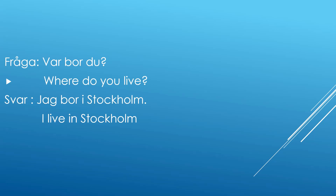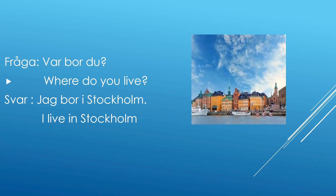The next question word is 'var', which means 'where'. Example: 'Var bor du?' means 'where do you live?' The answer can be 'Jag bor i Stockholm' — I live in Stockholm. You can change this city name to wherever you live. If talking to someone in another country, you can say any place name. So: 'Var bor du?' — 'Jag bor i Stockholm.'